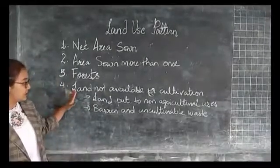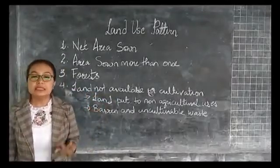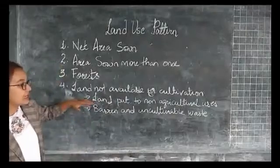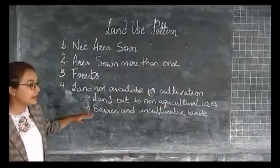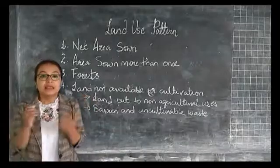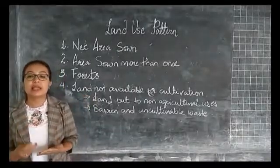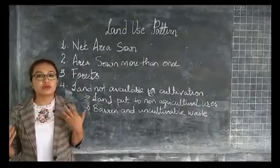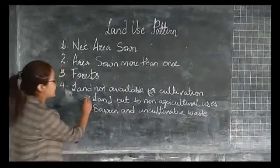The fourth pattern of land utilization is land not available for cultivation, which is divided into two types. First is land put to non-agricultural uses, which includes land under settlements — rural or urban — and infrastructure such as roads, railways, industries, shops, etc.